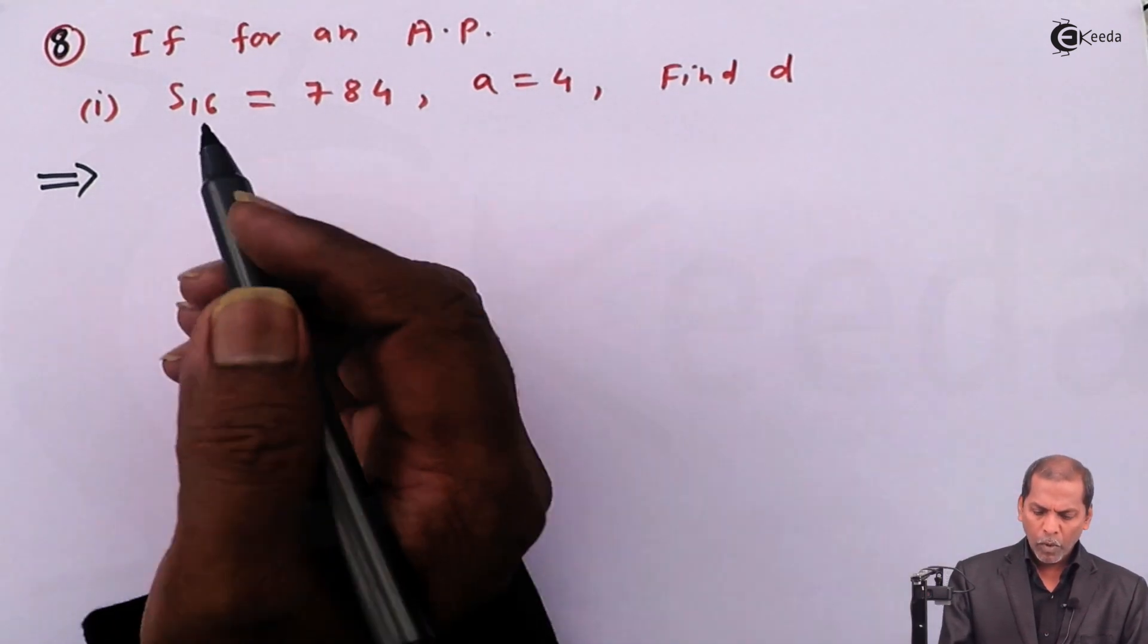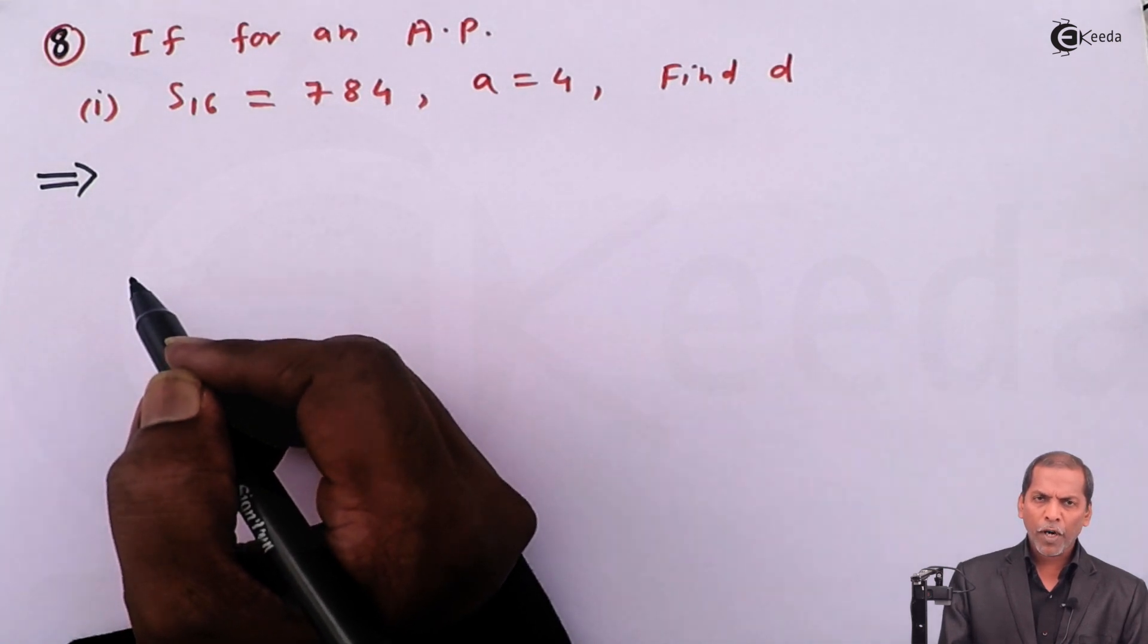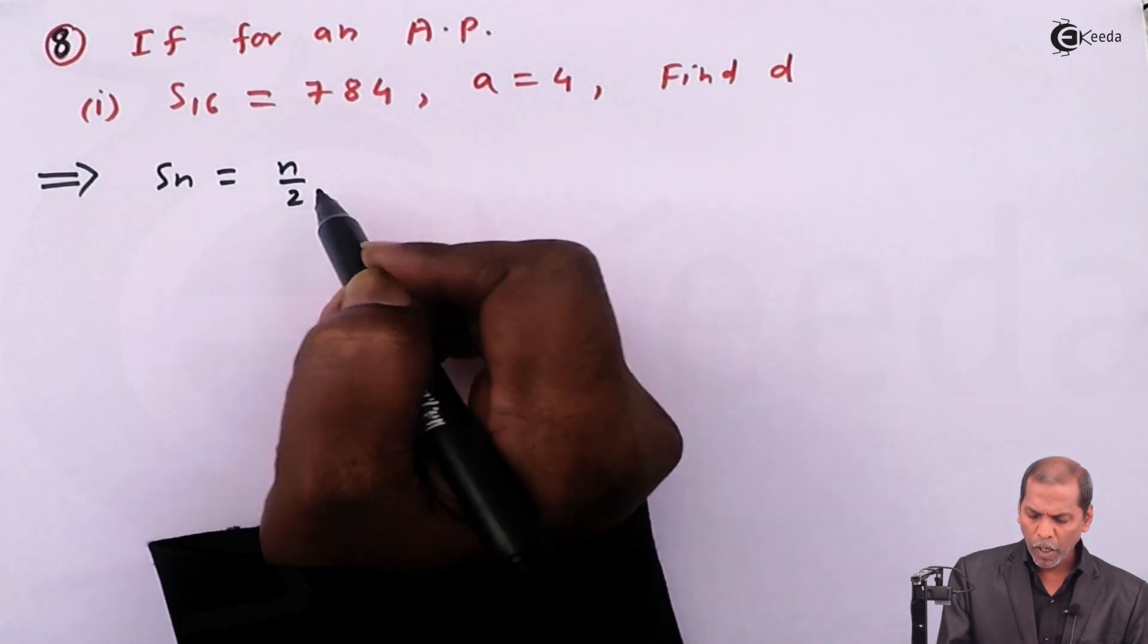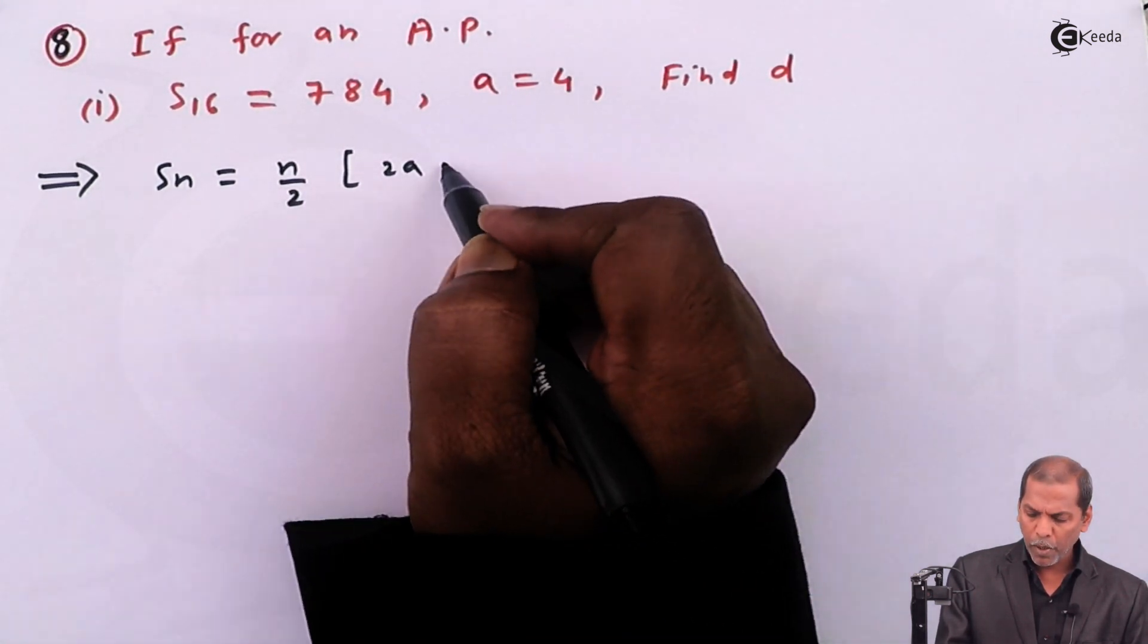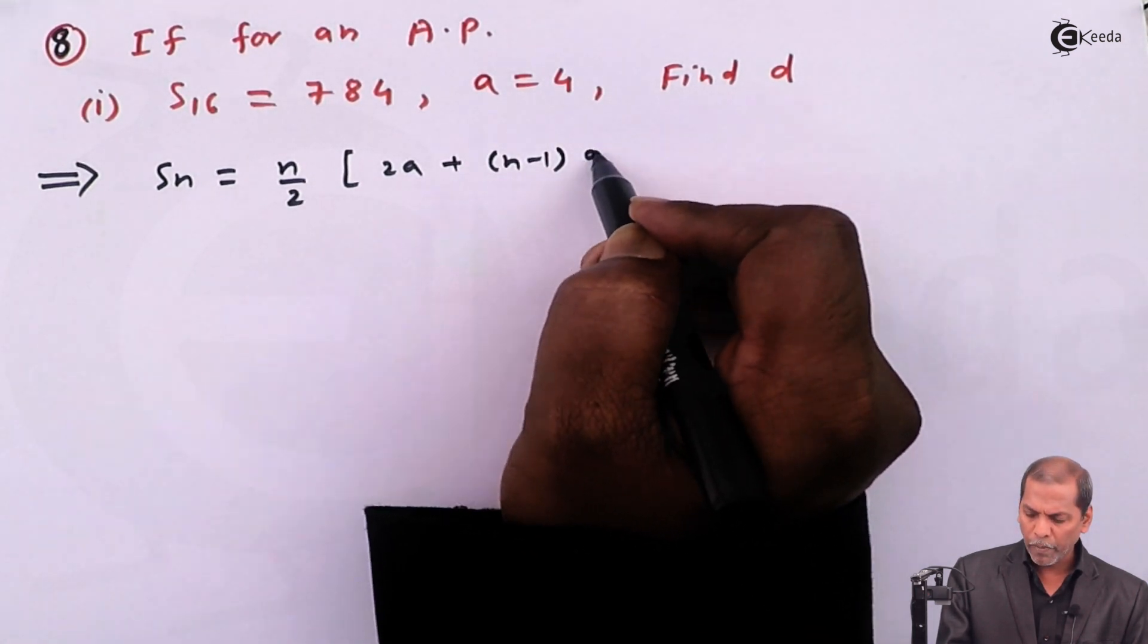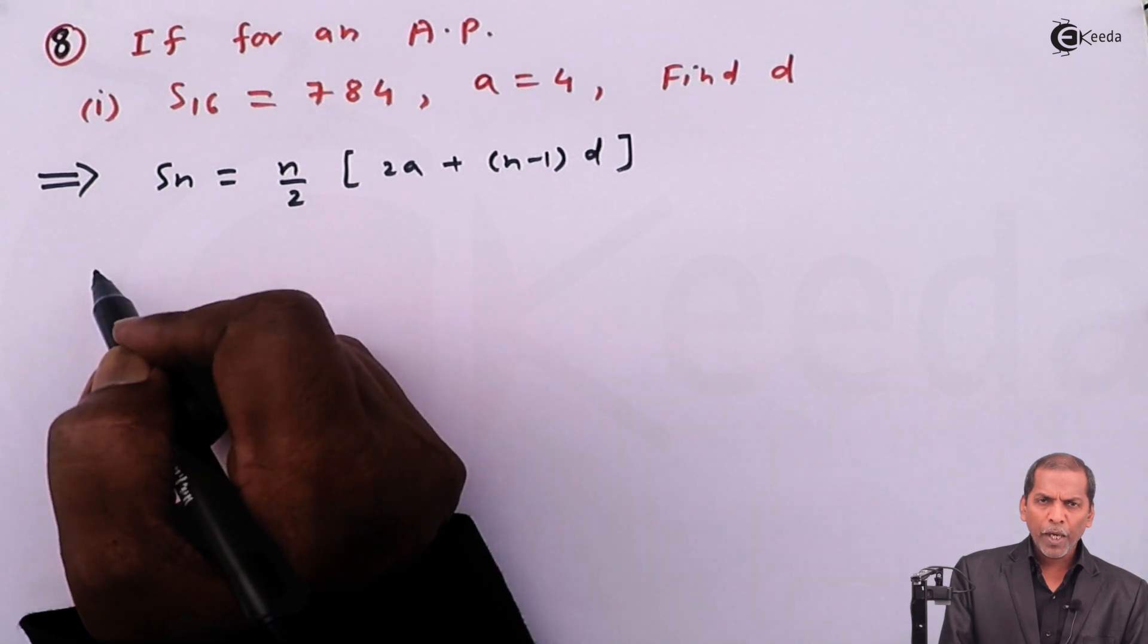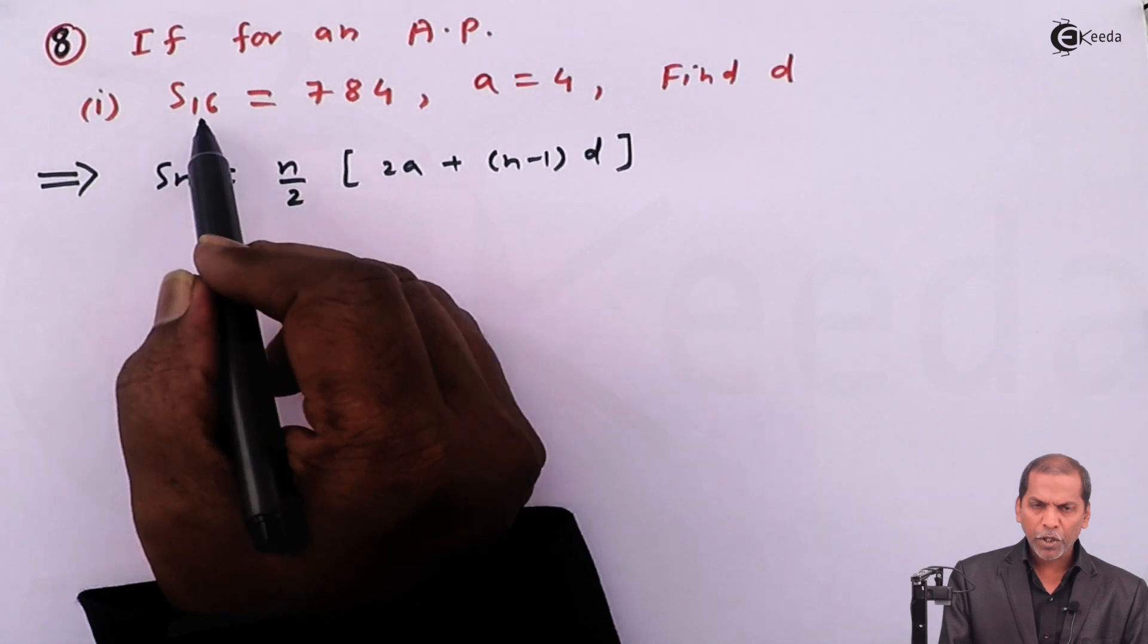Now let's see the solution. First we write the formula for Sn, so Sn is equal to n upon 2 in bracket 2a plus n minus 1 into d, square bracket complete. Now we substitute the corresponding values since S16 is given as 784.